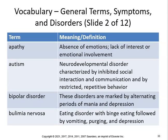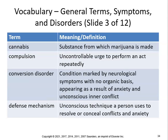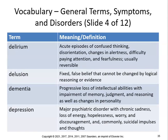Autism is a neurodevelopmental disorder characterized by inhibited social interaction, communication, and restricted repetitive behavior. Bipolar disorder involves alternating periods of mania and depression. Bulimia is an eating disorder with binge eating followed by vomiting, purging, and depression — know bulimia versus anorexia. Cannabis is the substance from which marijuana is made. Compulsion is an uncontrollable urge to perform an act repeatedly. Conversion disorder is marked by neurological symptoms with no organic basis, appearing as a result of anxiety and unconscious inner conflict. Defense mechanisms are unconscious techniques a person uses to resolve or conceal conflicts and anxiety. Delirium is an acute episode of confused thinking, disorientation, changes in alertness, difficulty paying attention, fearfulness — usually reversible. Delusion is a fixed false belief that cannot be changed by logical reasoning or evidence. Dementia is progressive loss of intellectual abilities with impairment of memory, judgment, and reasoning, as well as changes in personality.